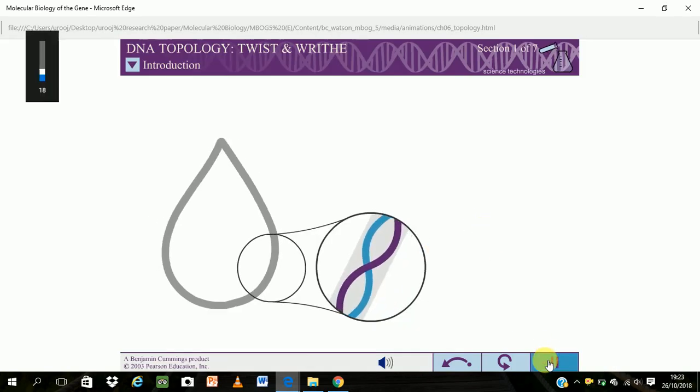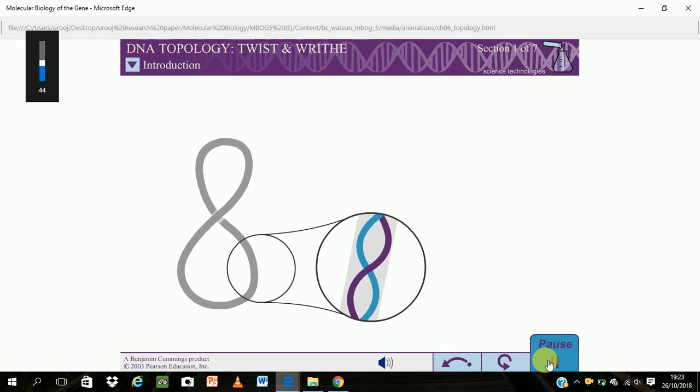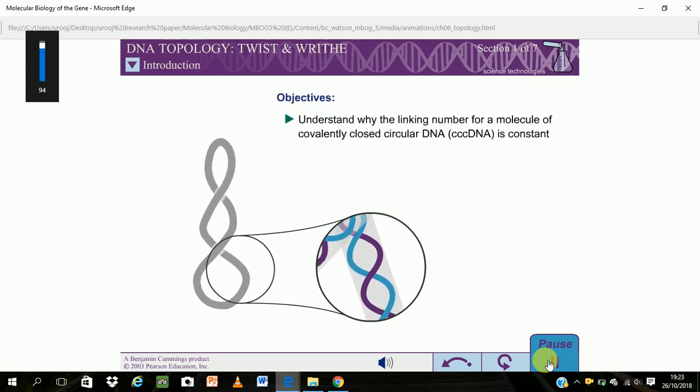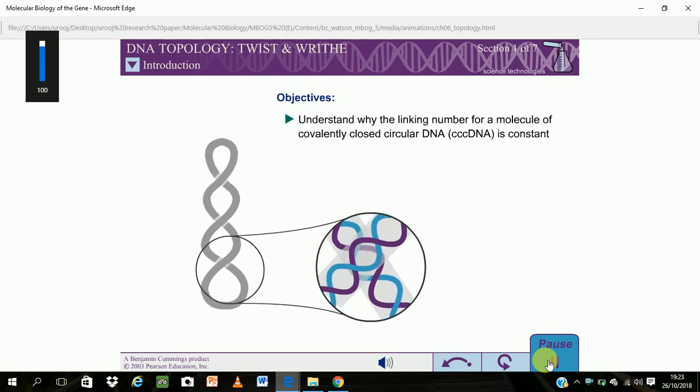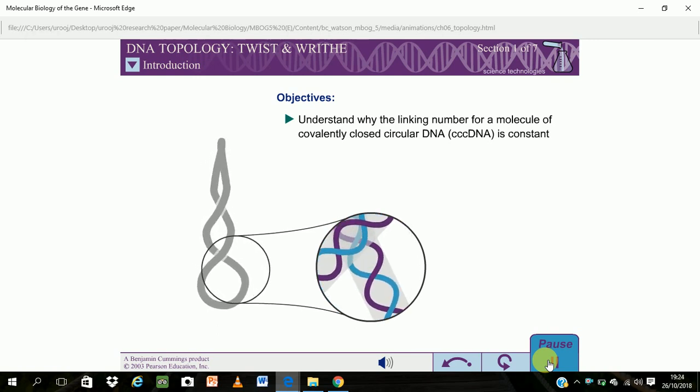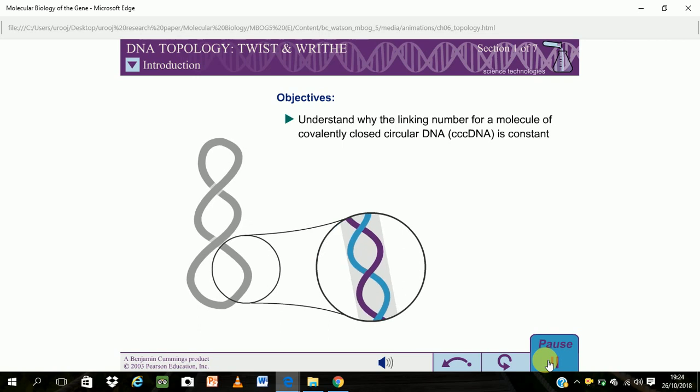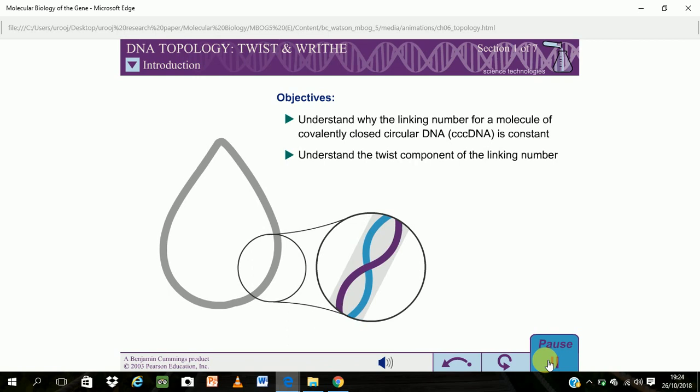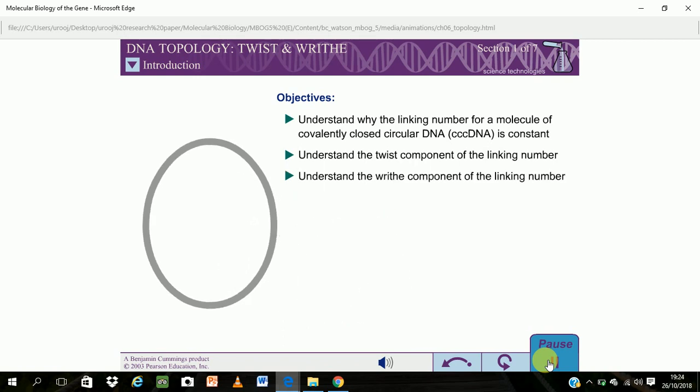This methodology describes the coiling of a molecule of DNA. When you have completed this exercise, you should understand why the linking number for a molecule of covalently closed circular DNA, or CCC DNA, is constant. Understand the twist component of the linking number, understand the writhe component of the linking number, and understand how cells utilize supercoiling.